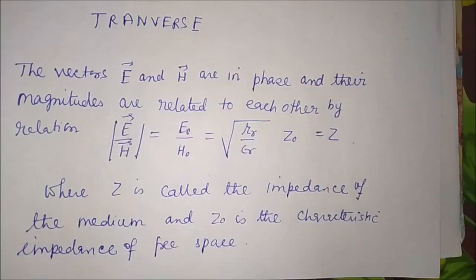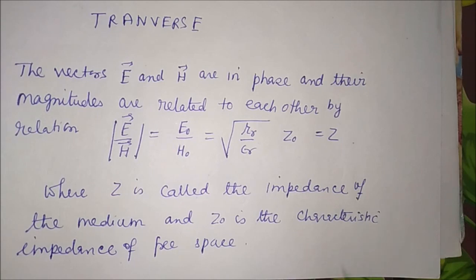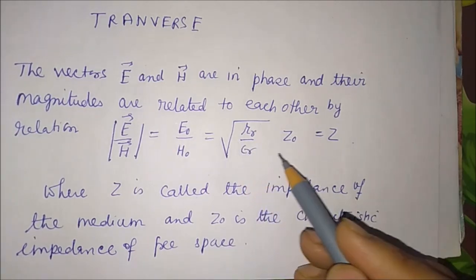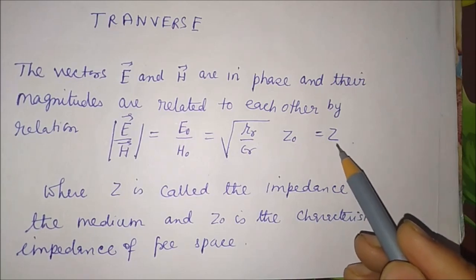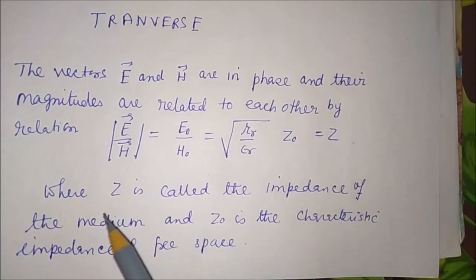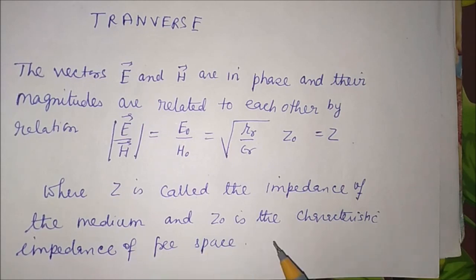The second consequence: the vectors E and H are in phase and their magnitudes are related by E/H equal to E₀/H₀ equal to sqrt(mu_r/epsilon_r) times z₀ equal to z. Here z is called the impedance of the medium and z₀ is the characteristic impedance of free space.